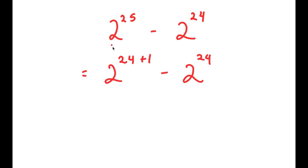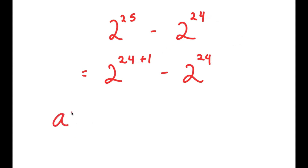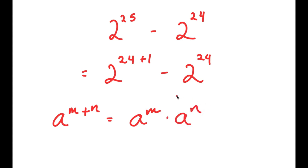The reason I did this is because we want both of these to be the same — we want to have 2 to the power of 24s. So the best way of changing 2 to the power of 25 as 2 to the power of 24 times something is to rewrite this as 2 to the power of 24 plus 1. Now I can use the property: a to the power of m plus n is equal to a to the power of m times a to the power of n.